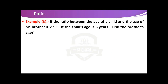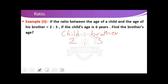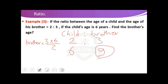Exercise 3. If the ratio between the age of a child and the age of his brother is 2 to 3, and the child's age is 6 years, find the brother's age. To solve this, we put both terms: the first is the child's age and the second is the brother's age. The ratio is 2 to 3 and the child's age is 6. So we multiply 3 by 6 and divide by 2. 3 times 6 equals 18, and 18 over 2 equals 9. So the brother's age is 9.